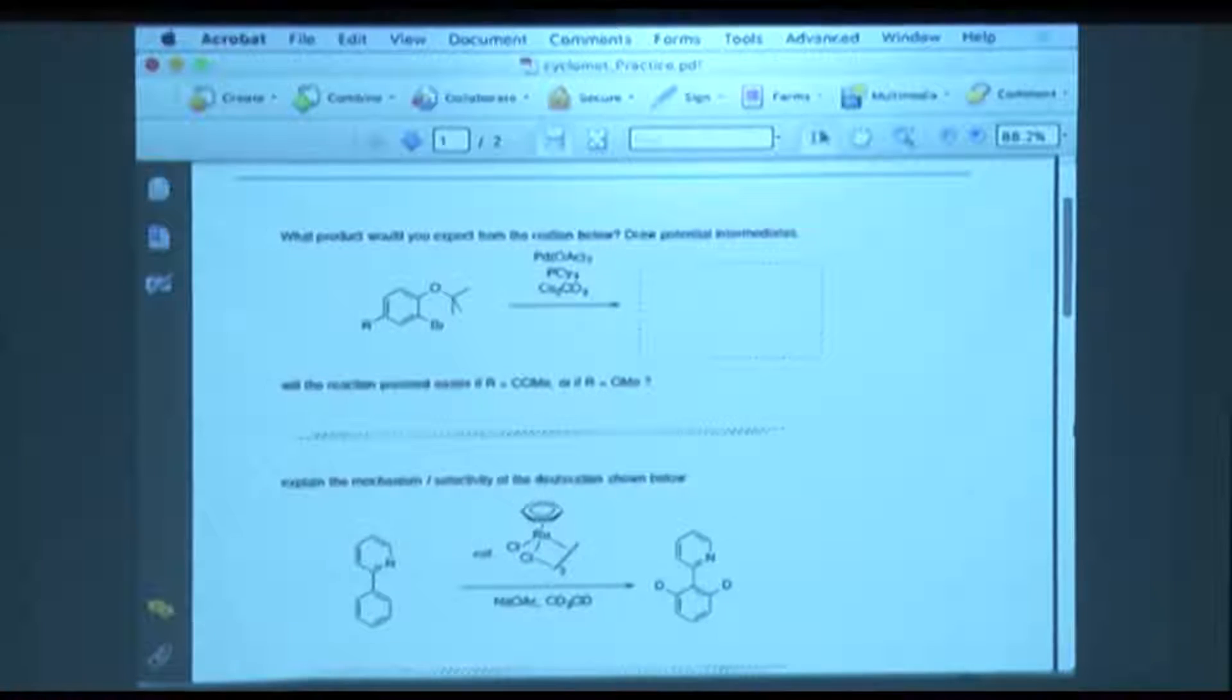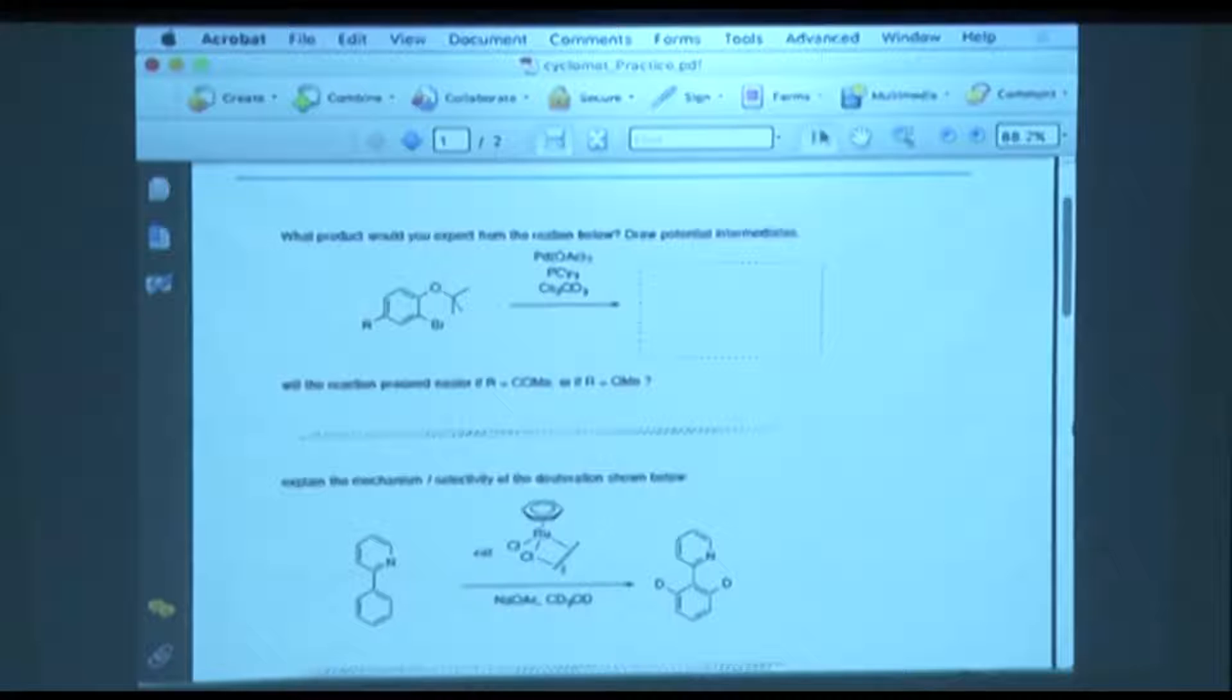After we discussed the whole palladium chemistry, here's an example with ruthenium. I hope this isn't too much of a difficulty. What happens if we add this ruthenium benzene dichloride dimer as a catalyst to that compound in the presence of sodium acetate? We use methanol. Why do we get this product?